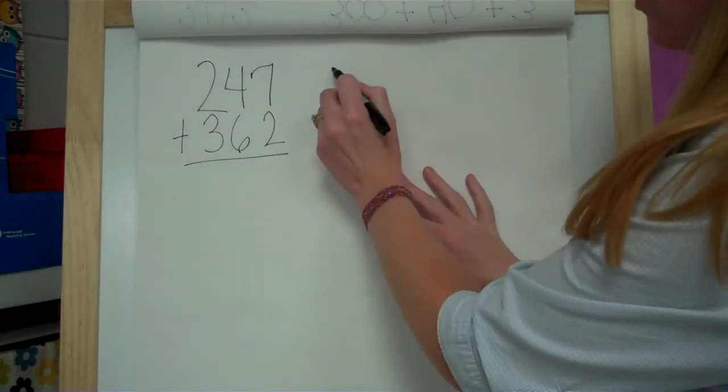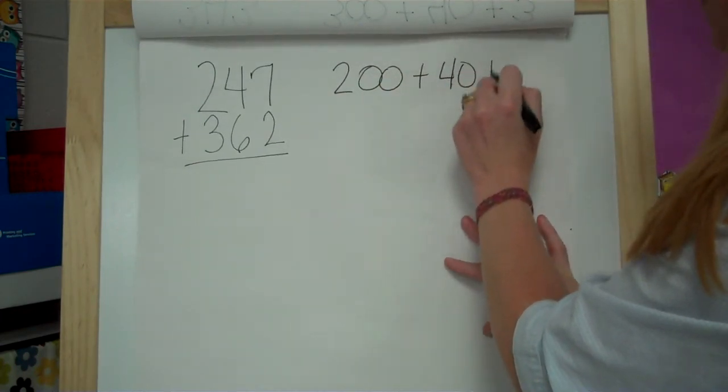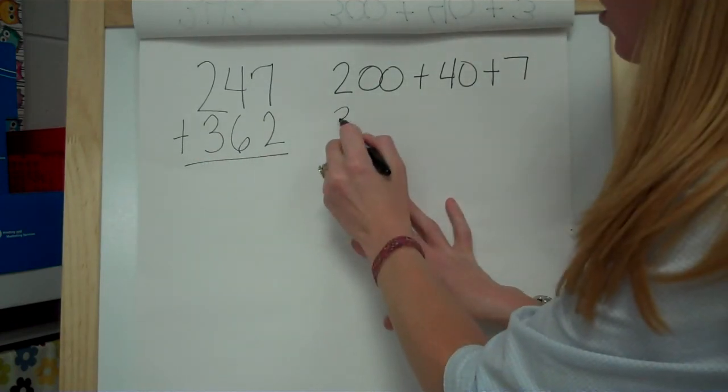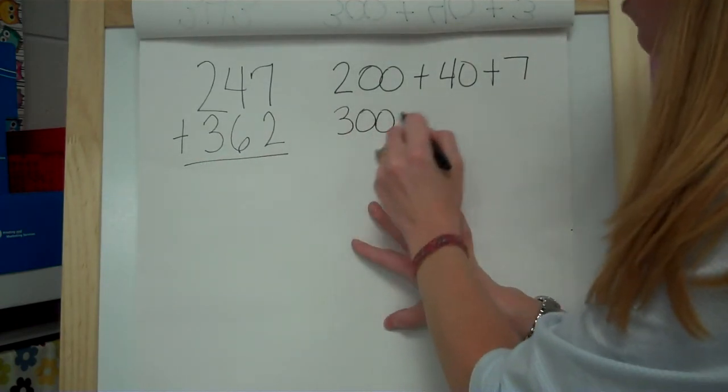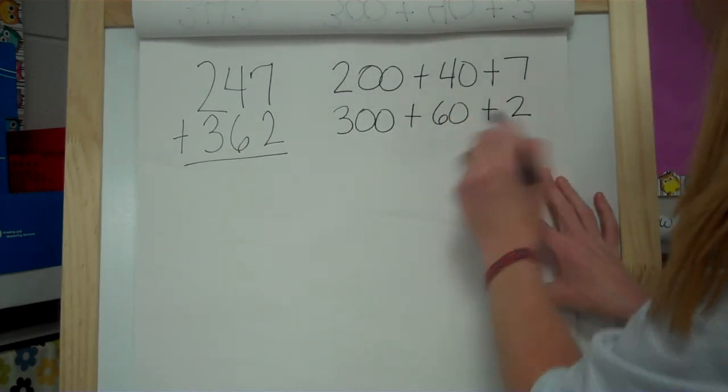So 247, we're going to break it apart to 200 plus 40 plus 7. And then 362, we're going to break it up into 300 plus 60 plus 2.